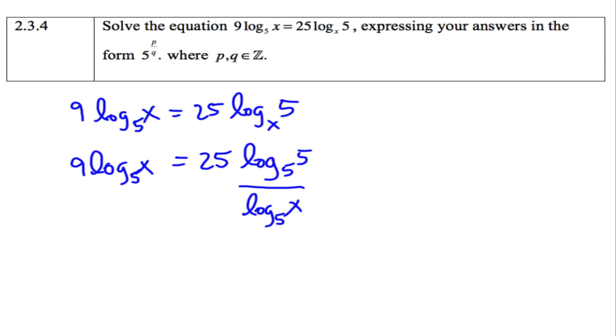And now this piece becomes 1. I'm going to cross multiply. We have 9 log₅(x) times log₅(x), so 9(log₅(x))², equals 25.